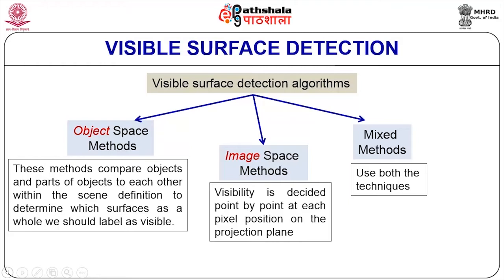Object space means we imagine we are in the 3D world and identify objects that are visible within it and which are obscured or hidden by other objects, then label only those surfaces that are visible. We compare each object in the 3D world with respect to other objects and determine what is the frontal face or what is the back face.